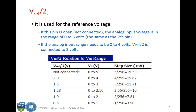Now comes the function of Vref/2 — it is used for the reference voltage. If this pin is open, then the analog input voltage is in the range of 0 to Vcc, or 0 to 5 volts. But if you want the analog input in the range of 0 to 4 volts, then you set Vref/2 to 2 volts. If it is 1.5 volts, then the range is 0 to 3, and so on.